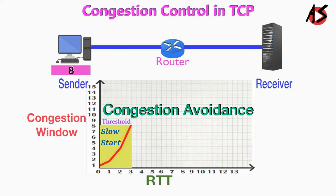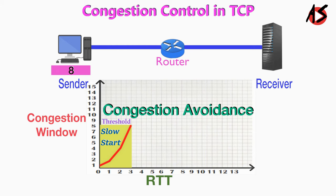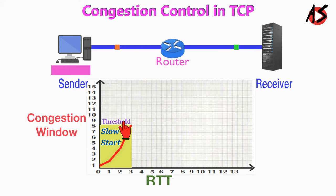If we start with the slow start algorithm, the size of the congestion window increases exponentially. To avoid congestion before it happens, one must slow down this exponential growth. TCP defines another algorithm called congestion avoidance, which increases the congestion window additively instead of exponentially. When the size of the congestion window reaches the slow start threshold, the slow start phase stops and the additive phase begins. In this algorithm, each time the whole window of segments is acknowledged, the size of the congestion window is increased by one.